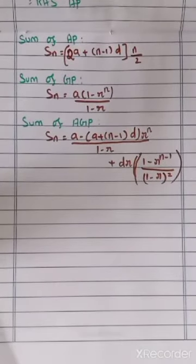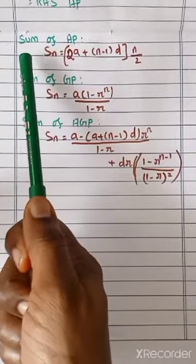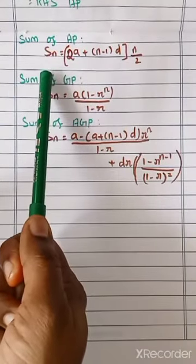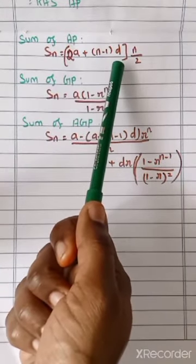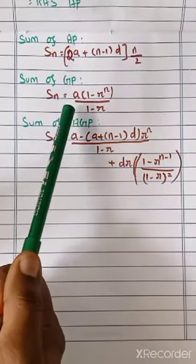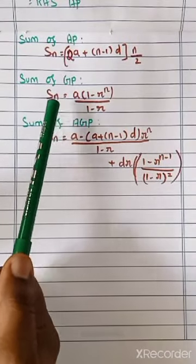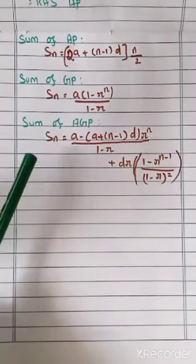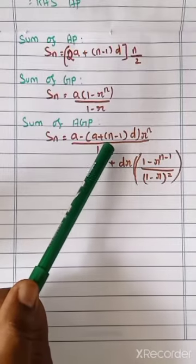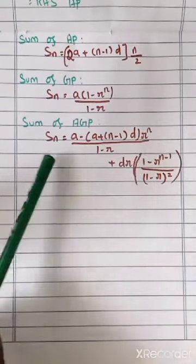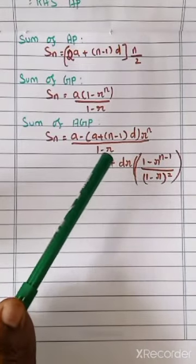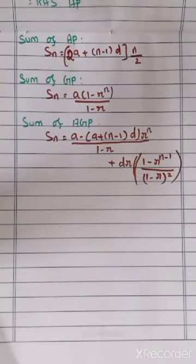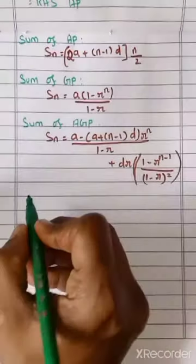Next, we are going to see sum of AP, GP and AGP. These formulas you have studied in your lower class, so that extension only we are going to see. Sum of AP: S_N equals N by 2 times (2A plus (N minus 1) D). Sum of GP: S_N equals A times (1 minus R power N) by (1 minus R). Sum of AGP: S_N equals (A minus (A plus (N minus 1)D) times R power N) divided by (1 minus R) plus (N minus 1) D by (1 minus R) whole squared.